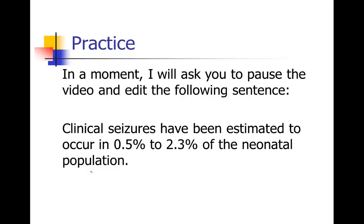Now I'm going to go through my edit on this sentence. 'Clinical seizures have been estimated to occur' — that seems like a lot of extra words. How about we just get rid of 'have been estimated to' and just say 'clinical seizures occur.' Some of you may feel that's too direct, wanting to hedge with 'it's been estimated to be.' But notice the statistics — 0.5% to 2.3% is a range, so it's obvious to the reader you're talking about estimates. So it's okay to just say 'clinical seizures occur,' and we can give references for those numbers. We don't need all this 'have been estimated to.'